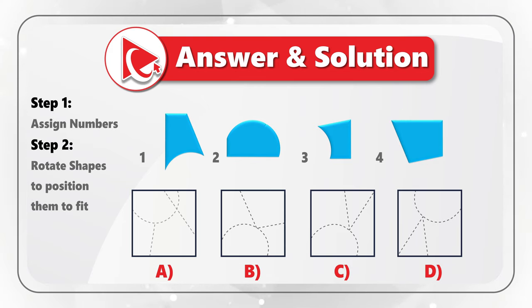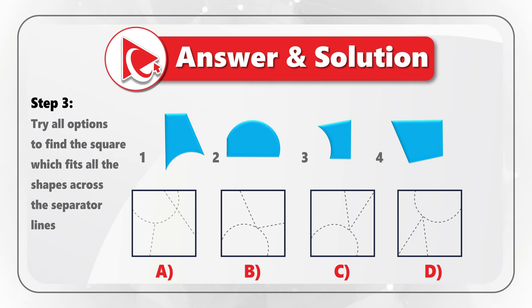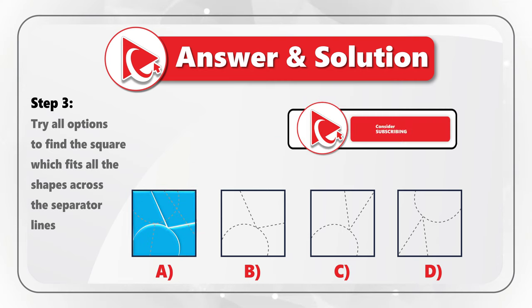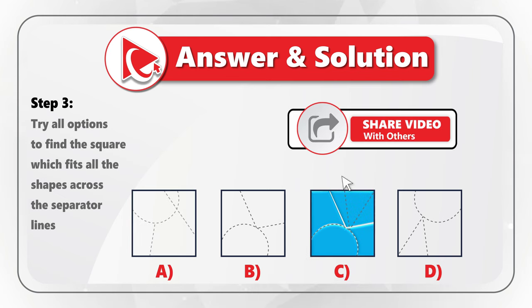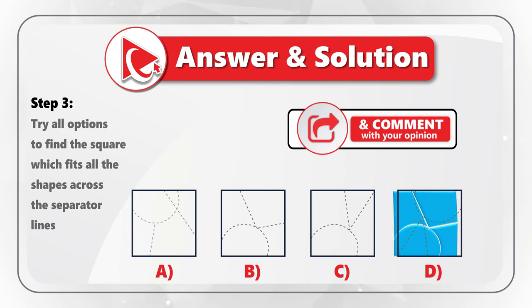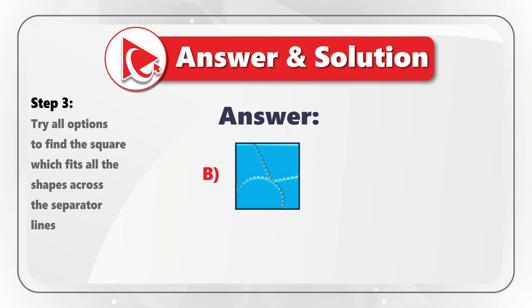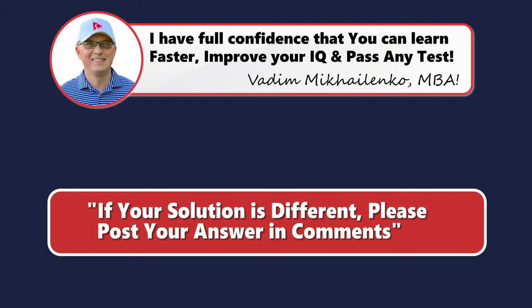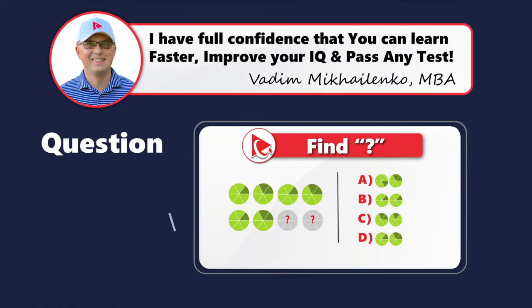You need to watch out because rotation could be in different directions, as it happens in this question as well. Once you have all the shapes rotated correctly, we move to step three, where we try all the options. Square A is not going to fit because there are five shapes based on the border lines. Square C also is not going to fit, same with square D. So the only correct answer here is choice B. Did you get to the same conclusion? Please post your answer and rationale in comments.